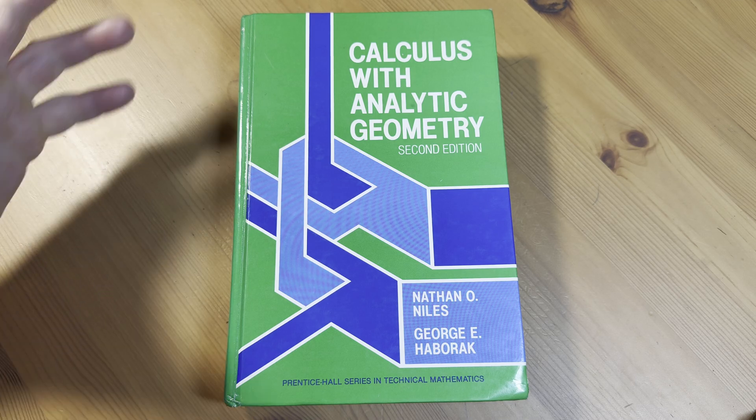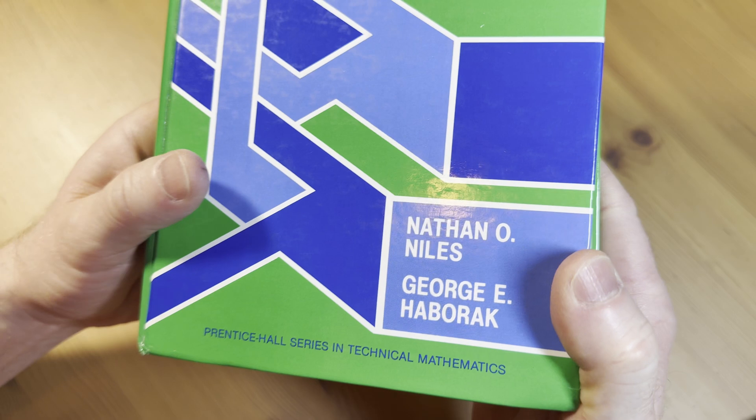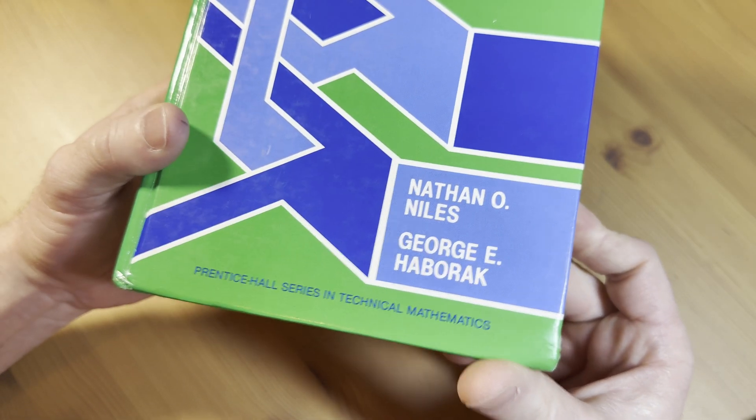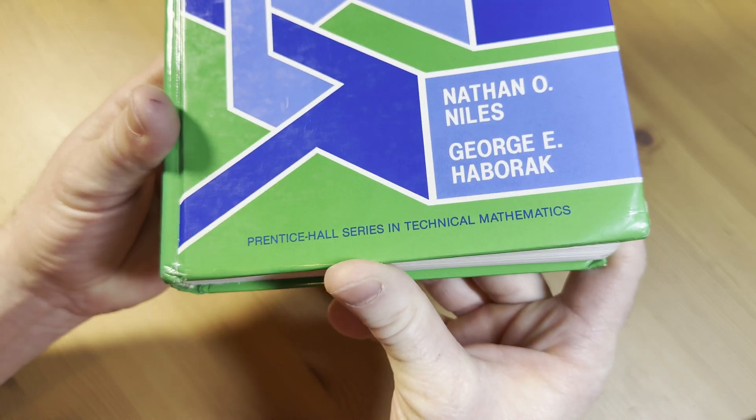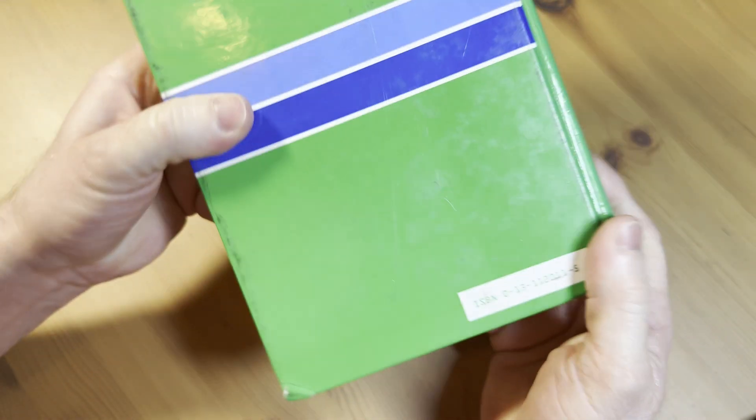It's just so green, isn't it? Calculus with Analytic Geometry. This one is by Nathan O'Niles and George E. Hablrock. Prentice Hall Series in Technical Mathematics. Yeah, this is an older book.